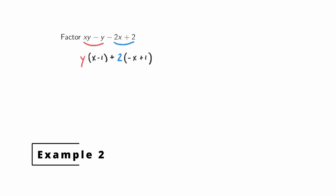We did not end up with the same binomial factor in both terms — we have x minus 1 and negative x plus 1, but one is the opposite of the other. So instead of factoring out positive 2, we factor out negative 2, which reverses the signs in the binomial factor, giving us negative 2 times x minus 1. Now we have the exact same binomial factor in each term. We factor that out and we're left with x minus 1 times y minus 2. You can check your work by multiplying back out.